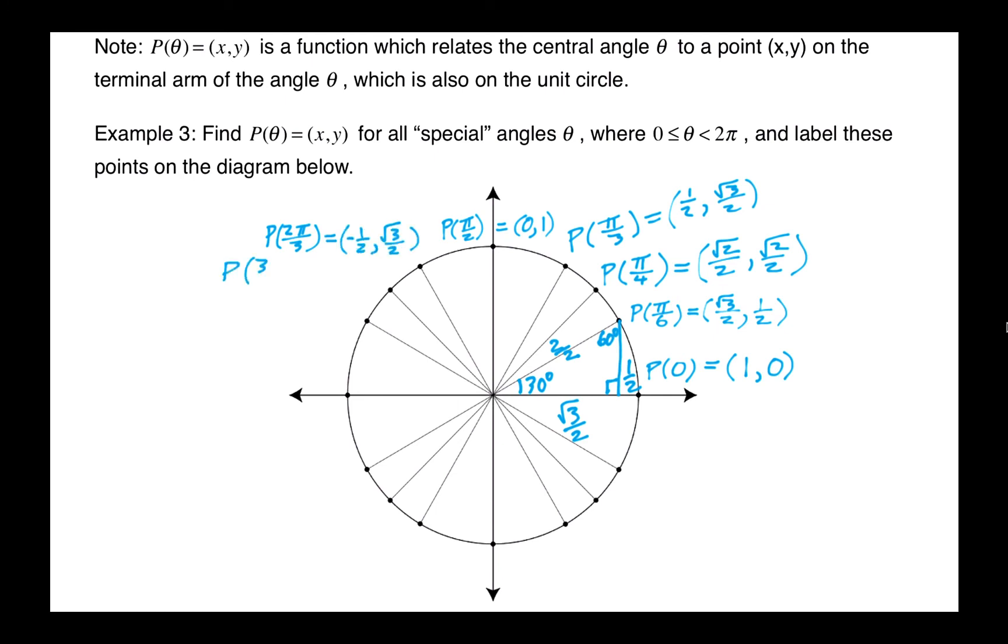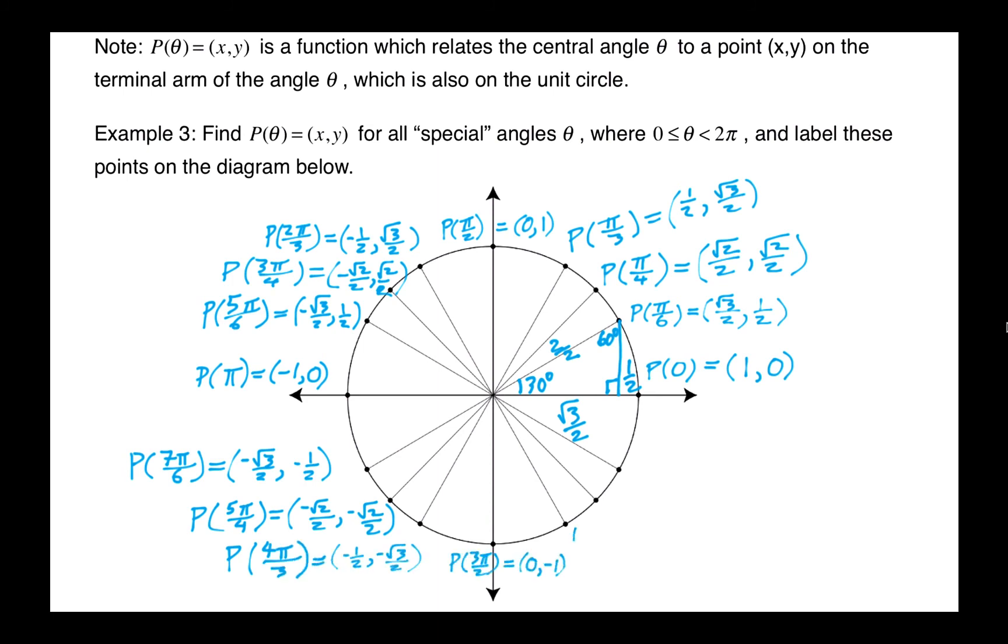And you should go ahead and work out all of the x and y coordinates for all of the other points going around that are on the terminal arms of each special angle. And here's the rest of what you would find. And we're back to the beginning.